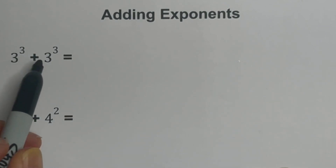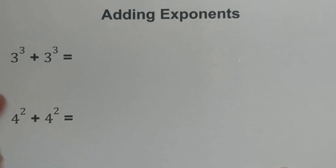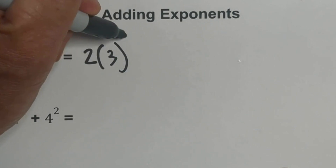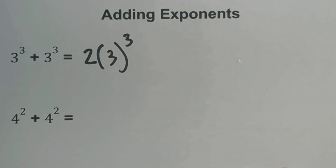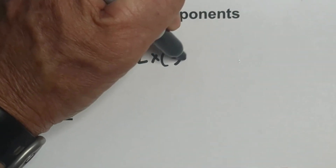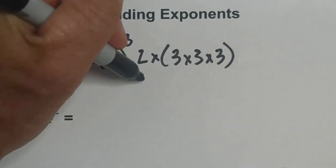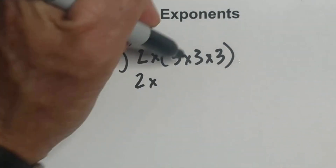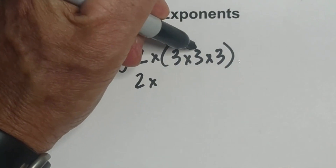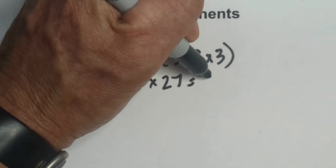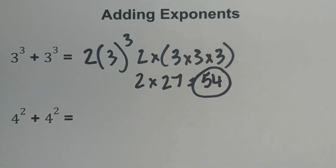Whenever you have same bases and same exponents, you can use 2 times the base and the exponent. So this becomes 2 times, in parentheses, 3 times 3 times 3. Working the parentheses: 3 times 3 is 9, 9 times 3 is 27, and then 27 times 2 is 54. So that's the first one.